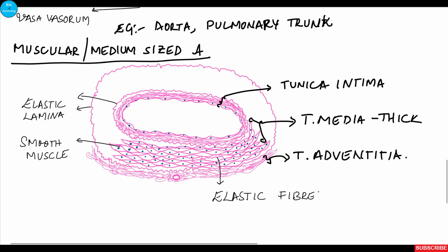Similarly, when food enters the stomach, the gastric vessels dilate to supply more blood to the stomach. When extra blood or nutrition is not needed, the smooth muscles contract and constrict the lumen, decreasing blood flow. Examples of muscular arteries include the radial artery, the gastric artery, and the ulnar artery.